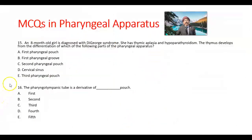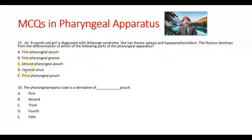Question number 15. An eight-month-old girl is diagnosed with DiGeorge syndrome. She has thymic aplasia and hypoparathyroidism. The thymus develops from where? Options: first pharyngeal pouch, second pharyngeal pouch, second pharyngeal groove, second pharyngeal pouch, cervical sinus, or third pharyngeal pouch. The answer is the third pharyngeal pouch.